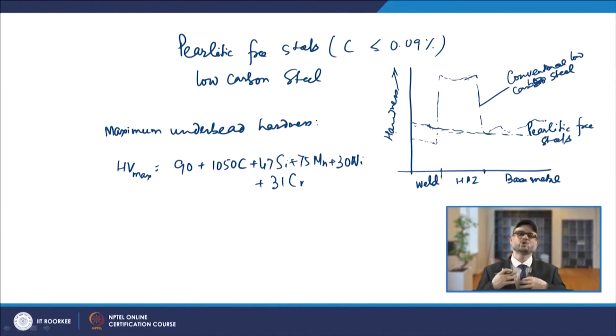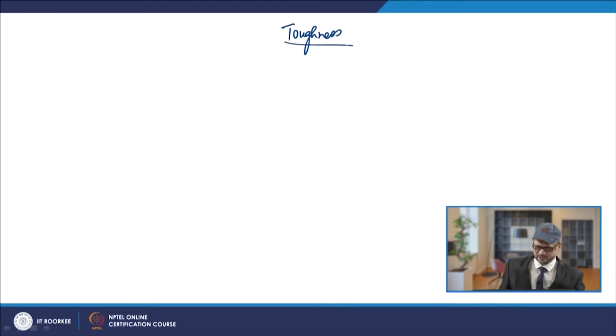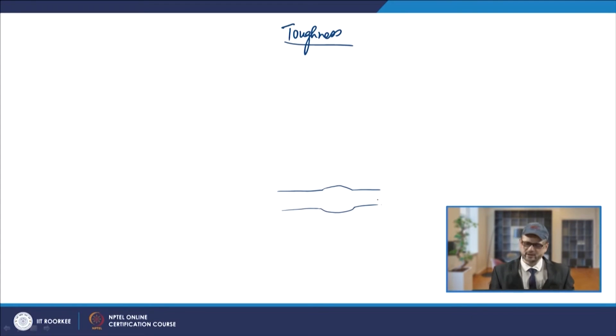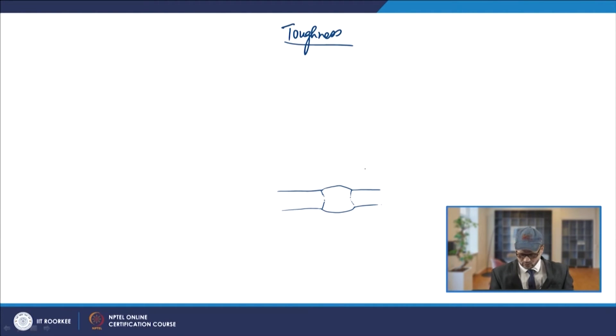If you try to look at the toughness values from experimental work done to measure toughness on a sample across the welded specimen, and try to see how toughness is varying, suppose you have a normal weld with different zones: the weld metal zone, the heat affected zone on one side, and the base metal zone on the other side.